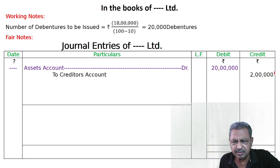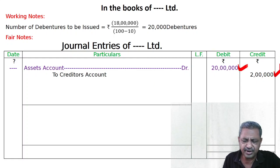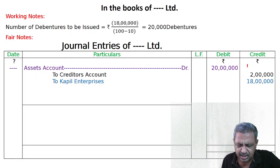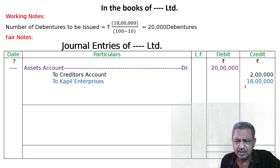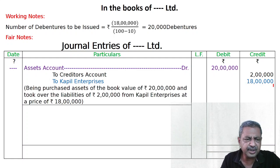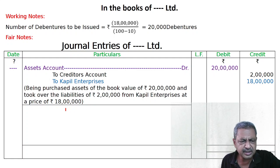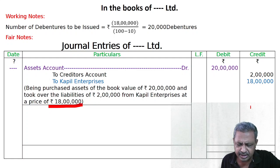Creditors account debited — 2 lakhs. To Vendors account, i.e., To Copil Enterprises — 18 lakhs. Being purchased assets of book value of 20 lakhs and liabilities of 2 lakhs from Copil Enterprises at a price of 18 lakhs, i.e., 20 minus 2 equals 18 lakhs.